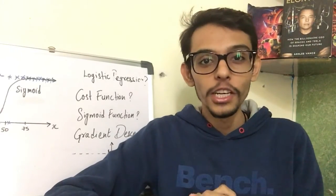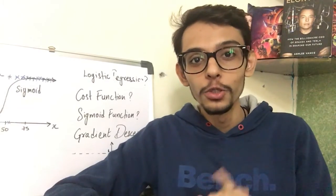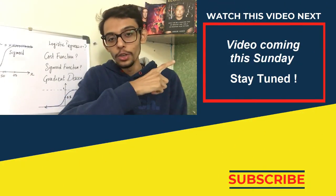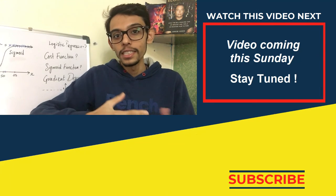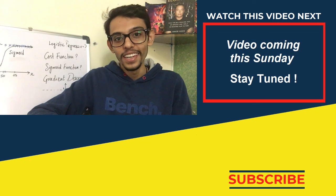So that was about the logistic regression cost function. Now to minimize this cost function we need to use something called gradient descent algorithm. Click on this video where we will look at what is gradient descent and how to apply gradient descent for logistic regression. So I see you there.